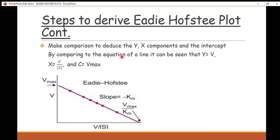So basically this is how to derive the Eadie-Hofstee plot from the Michaelis-Menten equation. The y-intercept gives V_max, and the slope equals negative K_m — so to get a positive value for K_m, multiply the slope by negative one. You can also use the x-axis intercept to find the other components.